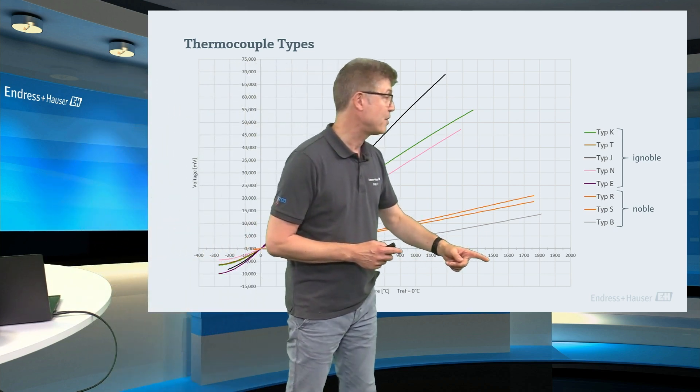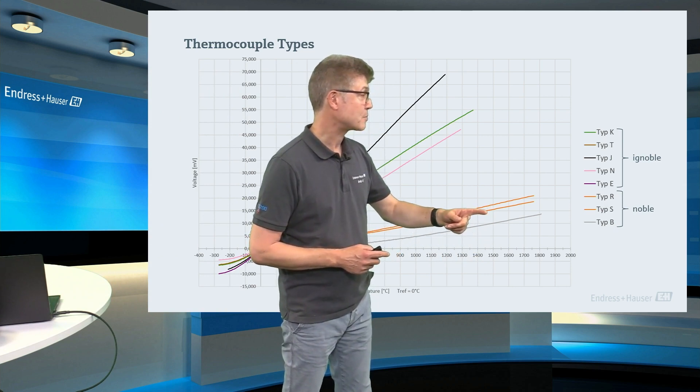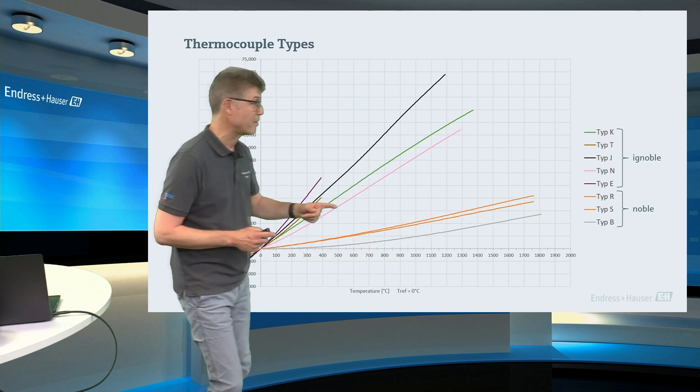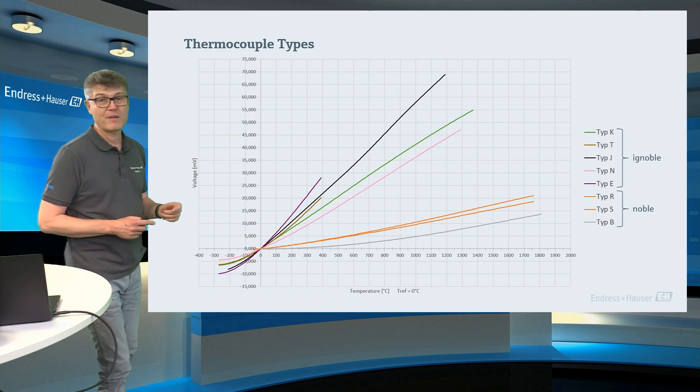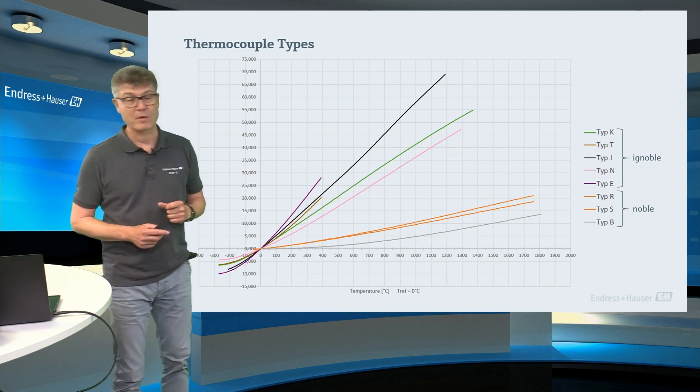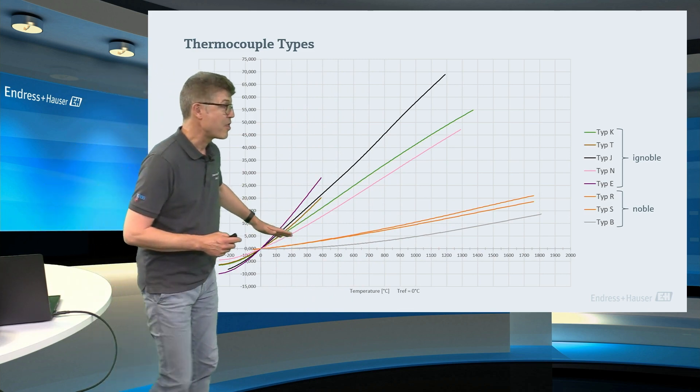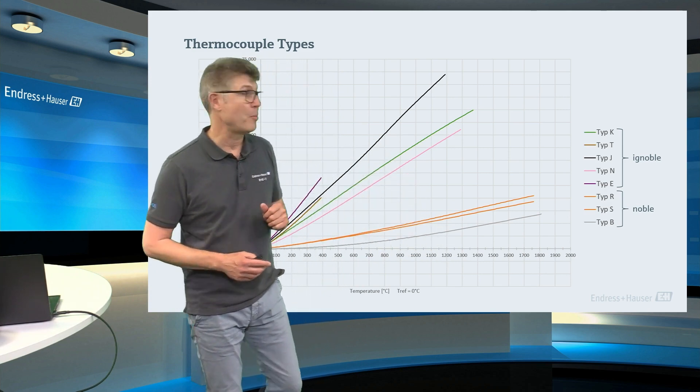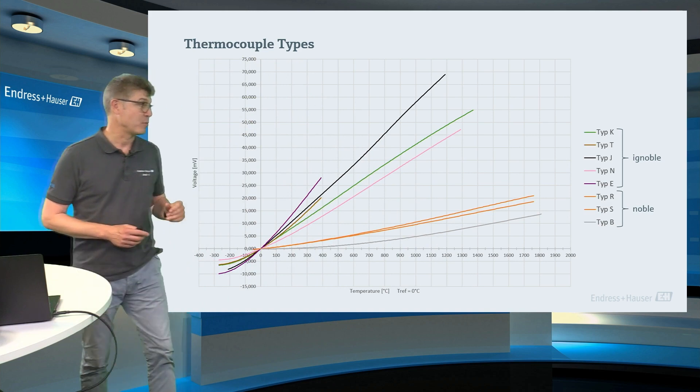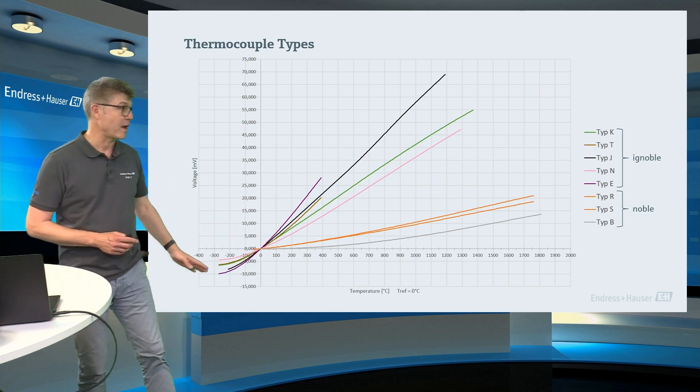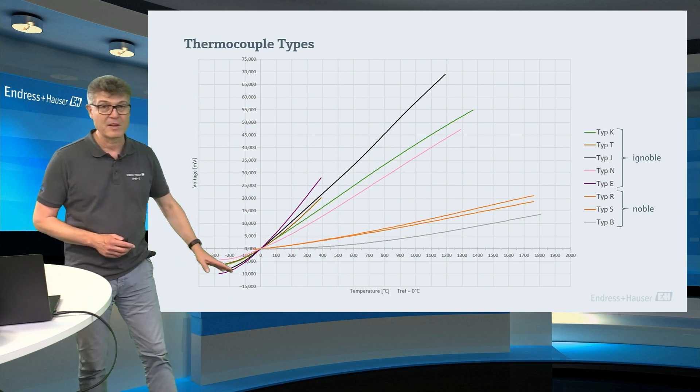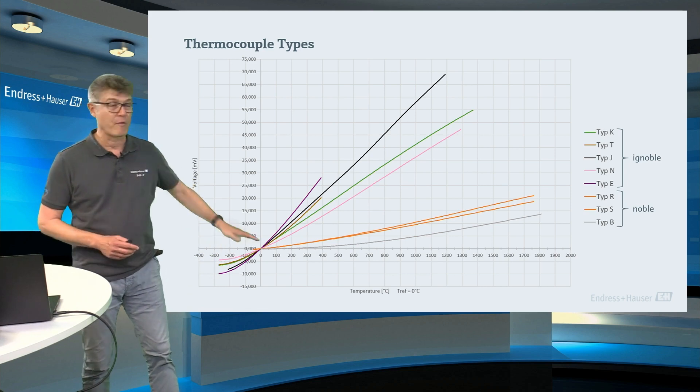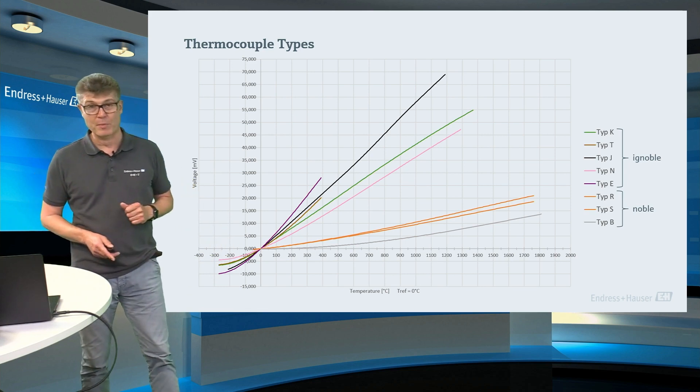And, for example, at 1500 degrees Celsius of difference, we have only 15 millivolts of signal. And you can see here, this is a clear curve. It's not linear, so there is quite complicated behavior in between. Especially if you go to negative temperatures, you clearly see that there are curvy behavior of the thermocouples.